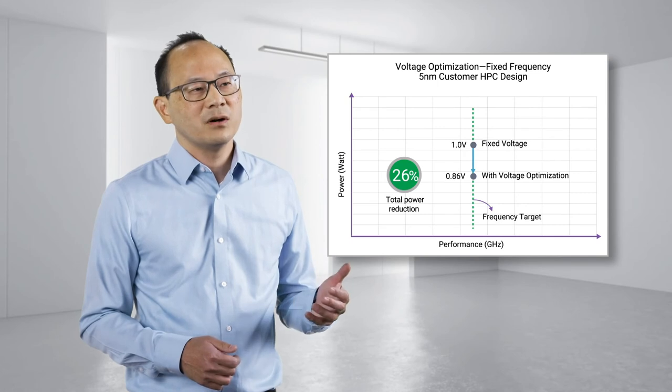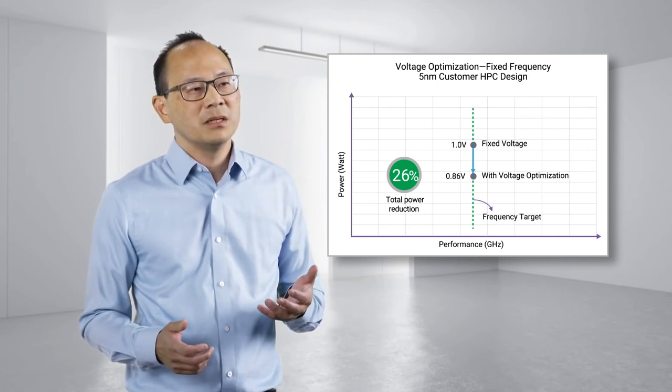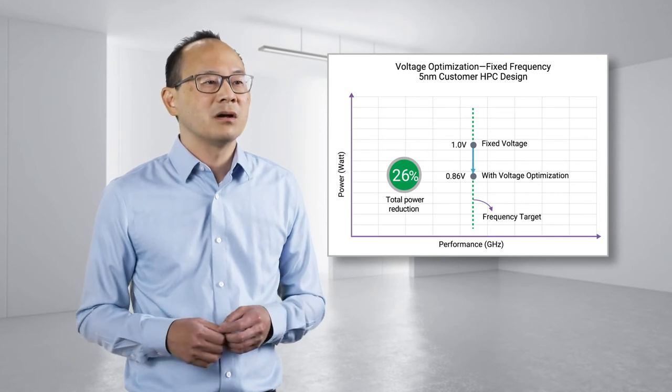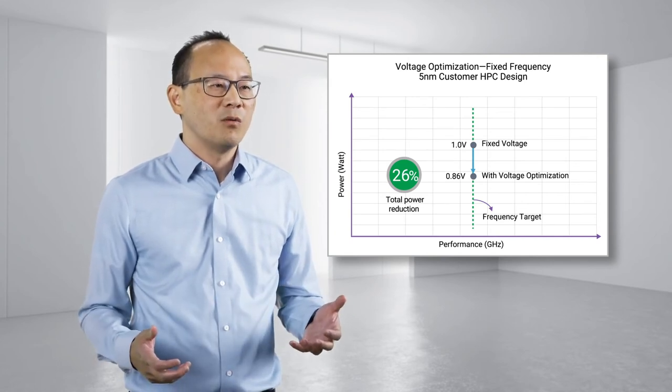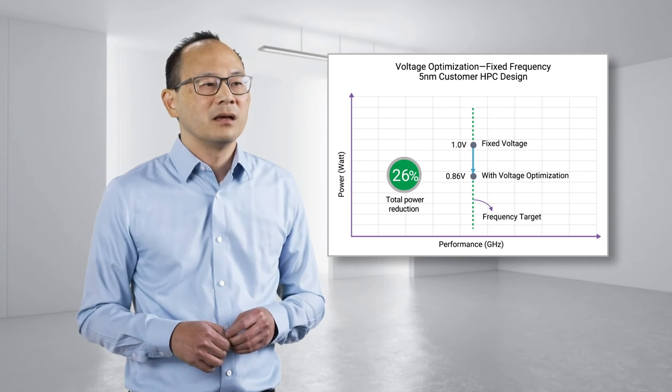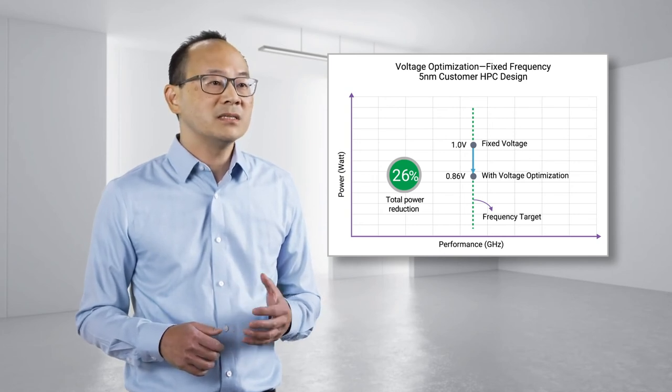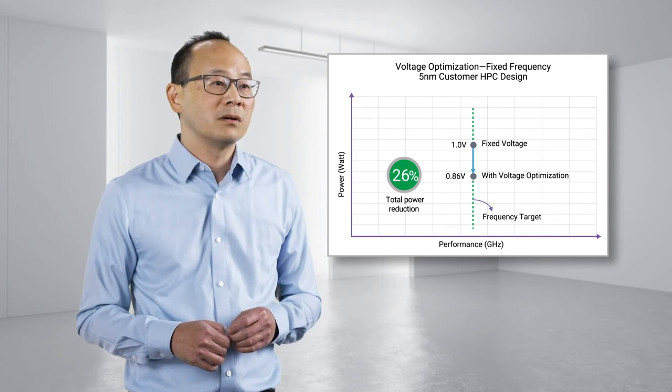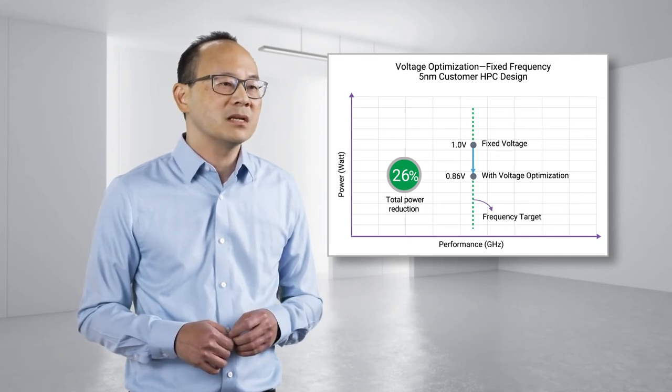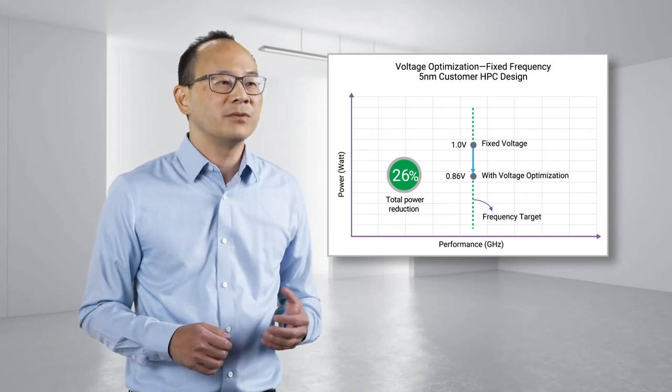Fusion Compiler and IC Compiler 2's latest voltage optimization technology now introduces the optimization of voltage level alongside other variables during design optimization, vastly expanding the solution space for the best PPA. In a design flow with a fixed frequency target, total power can be lowered by directly reducing dynamic power with a lower operating voltage while minimizing leakage and array impact. In a customer case study, a 5-nanometer HPC design was able to reduce power by 26% using a 14% lower operating voltage while meeting the same frequency target.